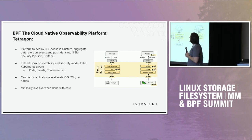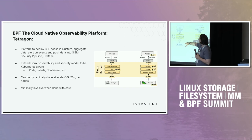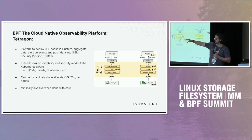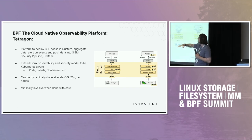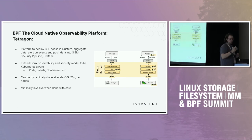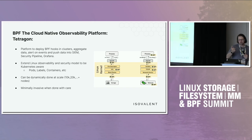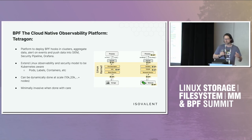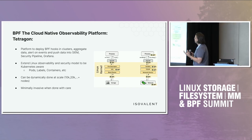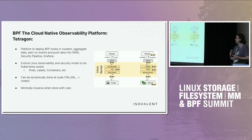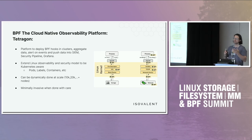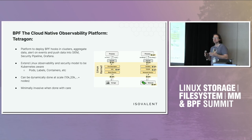Tetragon is mostly a platform. It gives you a mechanism to deploy BPF hooks, a way to aggregate statistics, and then push those into a SIEM, a security pipeline, or Grafana. We have protobuf backends, gRPC and JSON logs, and usually people collect those and feed them into their security pipeline or alerting systems.